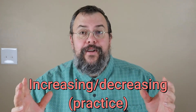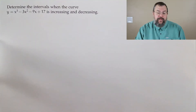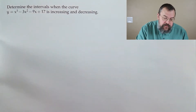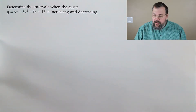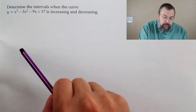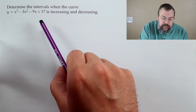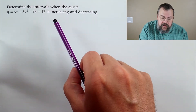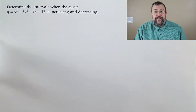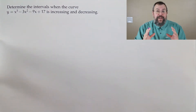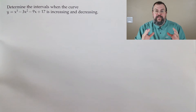Alright, let's begin. The first problem: determine the intervals when the curve y equals x cubed minus 3x squared minus 9x plus 17 is increasing and decreasing. That doesn't mean there's one interval where it's both increasing and decreasing, because you can't do those two things at the same time.